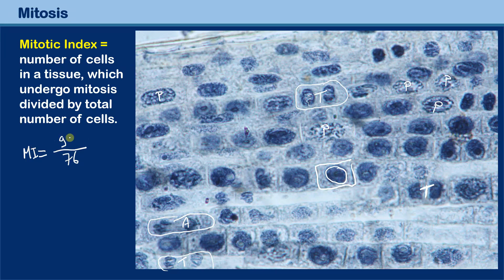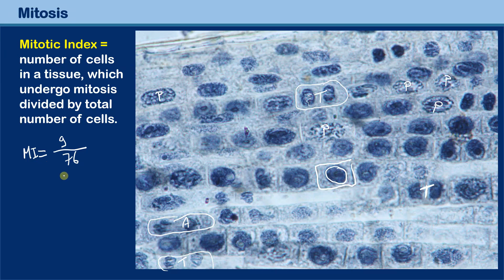If the ratio is high — if many cells undergo mitosis — then in an animal tissue this can be a sign of a tumor. But in plant roots like this one, it's not uncommon to have a large number of dividing cells, because it's a rapidly growing part of the plant. The larger the mitotic index, the faster the tissue is growing.